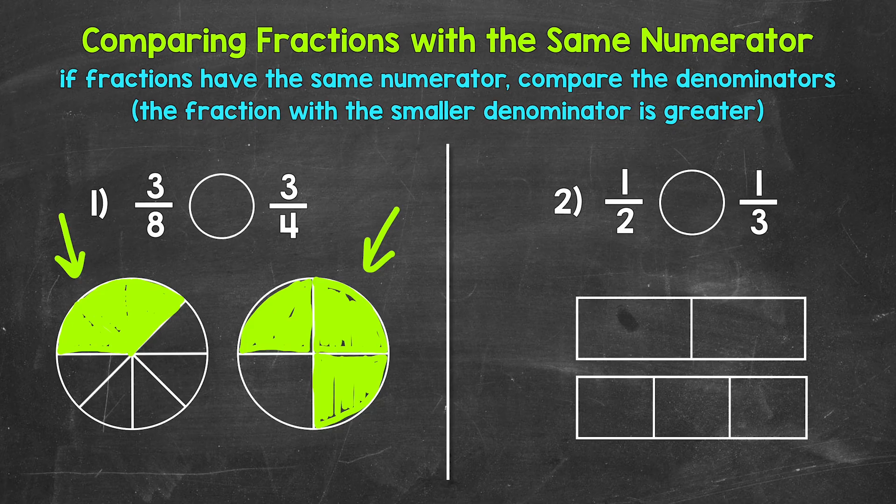Now remember, the comparison symbol always opens up towards whatever is greater, so our symbol goes like this. We can read this comparison from left to right as 3 eighths is less than 3 fourths.